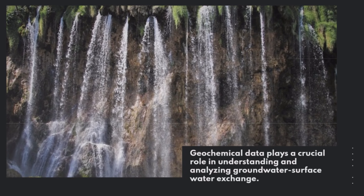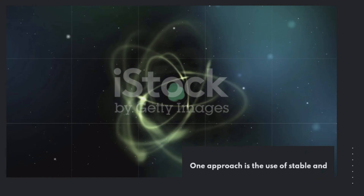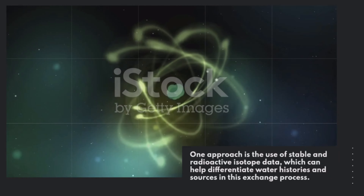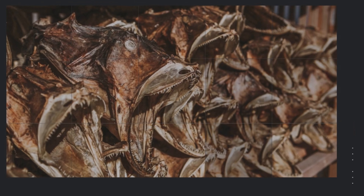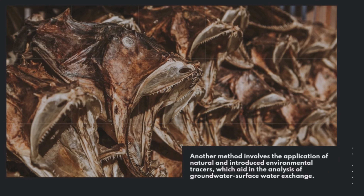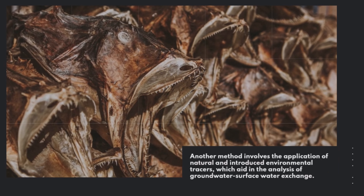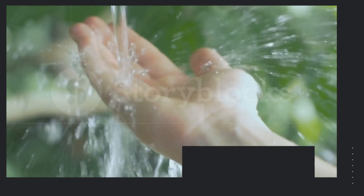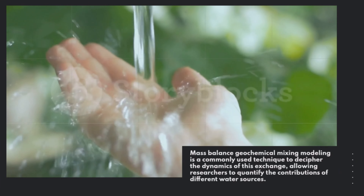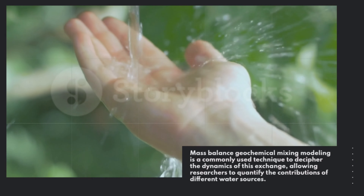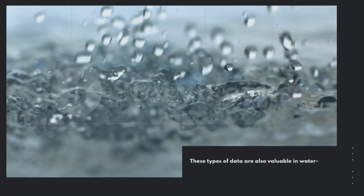Geochemical data plays a crucial role in understanding and analyzing groundwater-surface water exchange. One approach is the use of stable and radioactive isotope data, which can help differentiate water histories and sources in this exchange process. Another method involves the application of natural and introduced environmental tracers, which aid in the analysis of groundwater-surface water exchange. Mass balance geochemical mixing modeling is a commonly used technique to decipher the dynamics of this exchange.